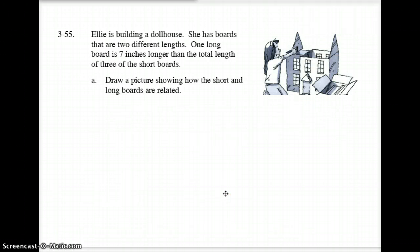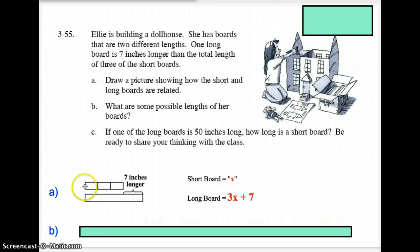Now if we were to put that in terms of algebraic terms, we could say that the short board would be x. So this here would be x plus x plus x, and the long board here then would be three of those x's plus an additional seven, or 3x plus 7. Hopefully that makes sense to you.